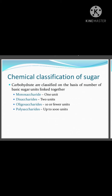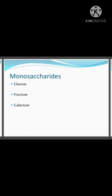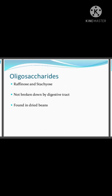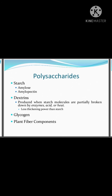Carbohydrates are divided into four categories based on the number of sugar units: monosaccharides (single sugar unit), disaccharides (two units), oligosaccharides (10 or fewer units), and polysaccharides (more sugar units). Examples of monosaccharides are glucose, fructose, and galactose. Disaccharides include lactose, sucrose, and maltose. Oligosaccharides include raffinose and stachyose, largely found in dried beans and not easily digested.